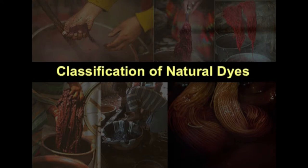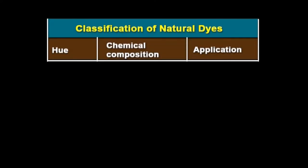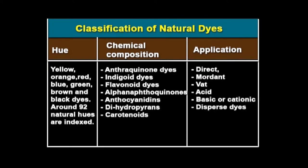Natural dyes can be classified in different ways: on the basis of hue, chemical composition, and application. The color index classifies dyes as per hue — yellow, orange, red, blue, green, brown, and black. Around 92 natural hues are indexed at present.